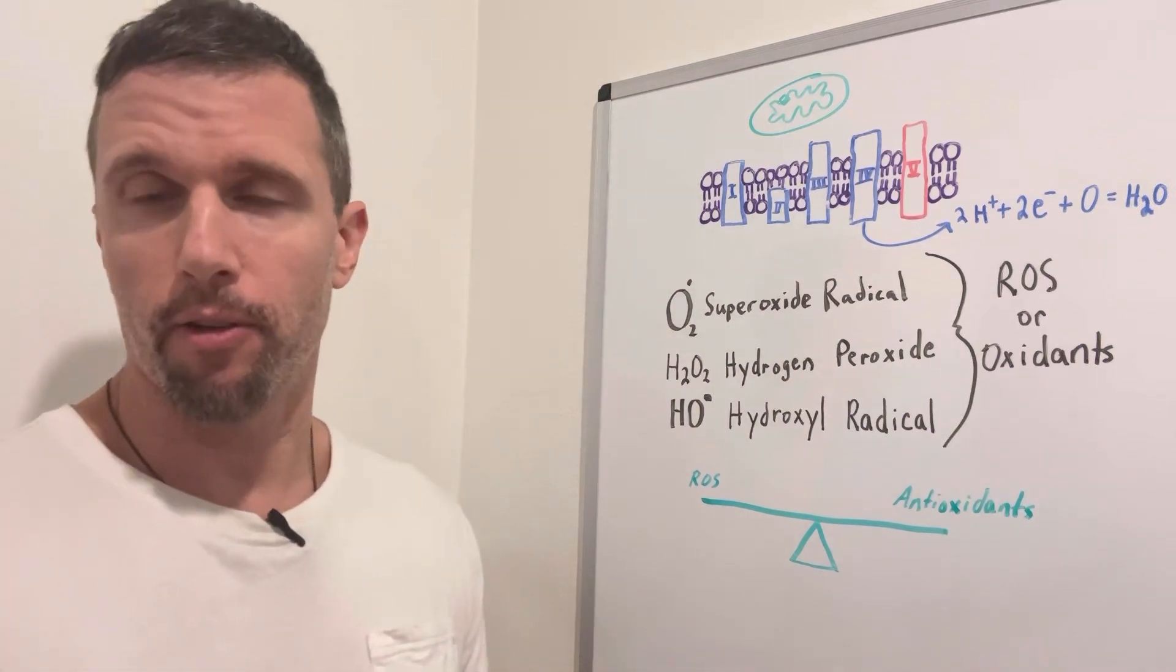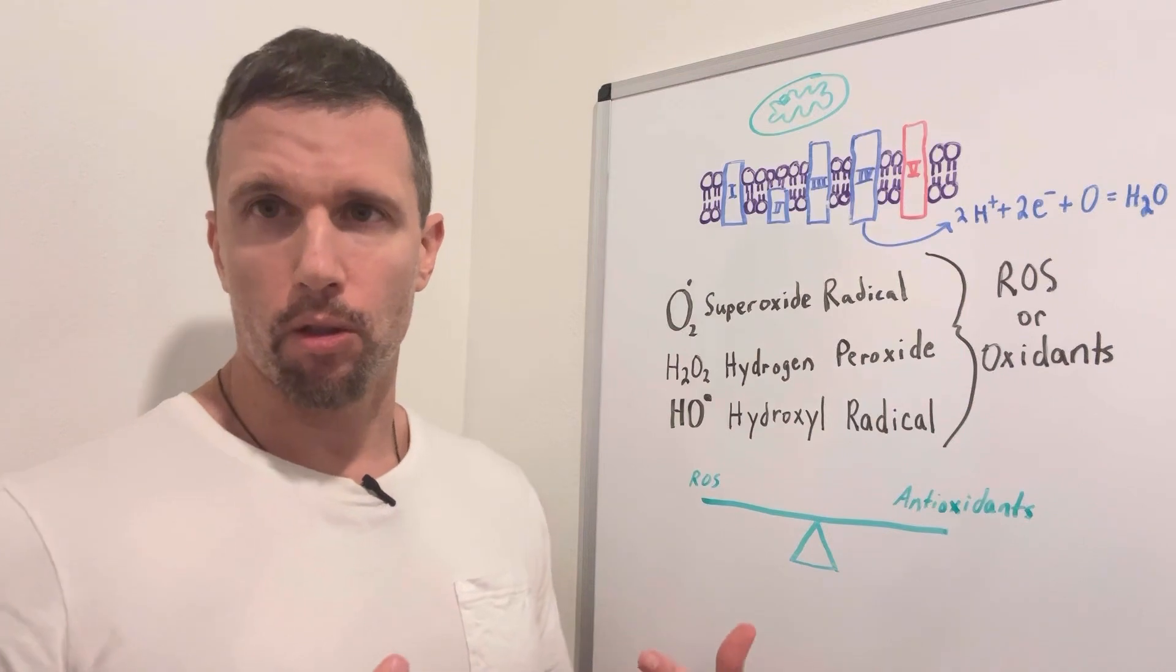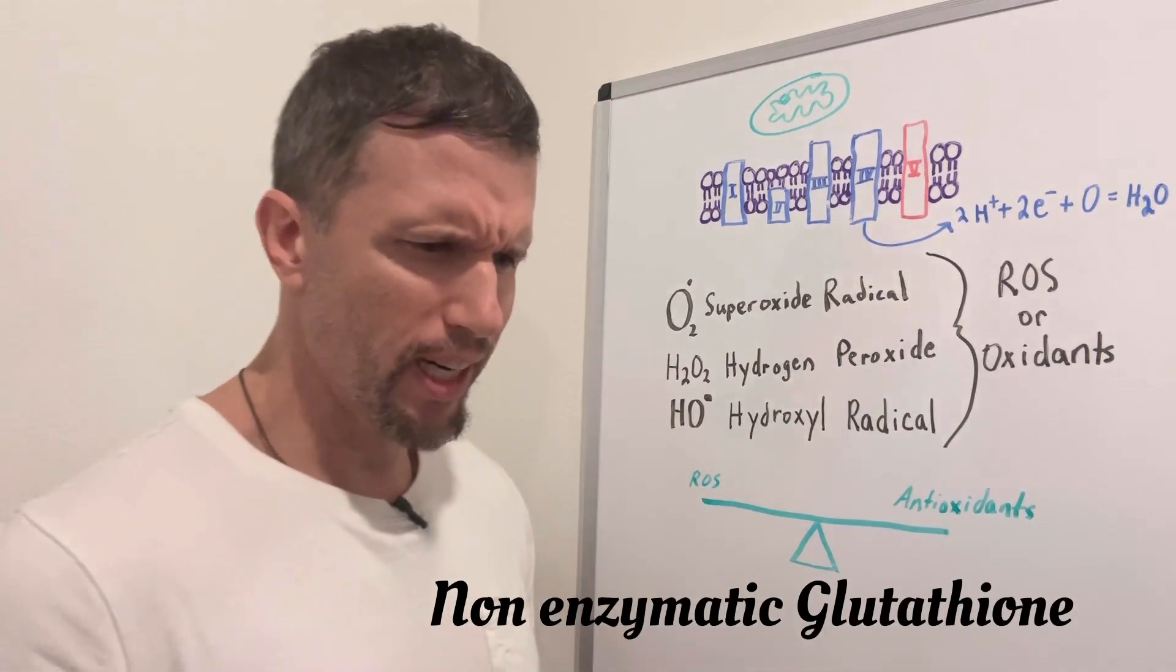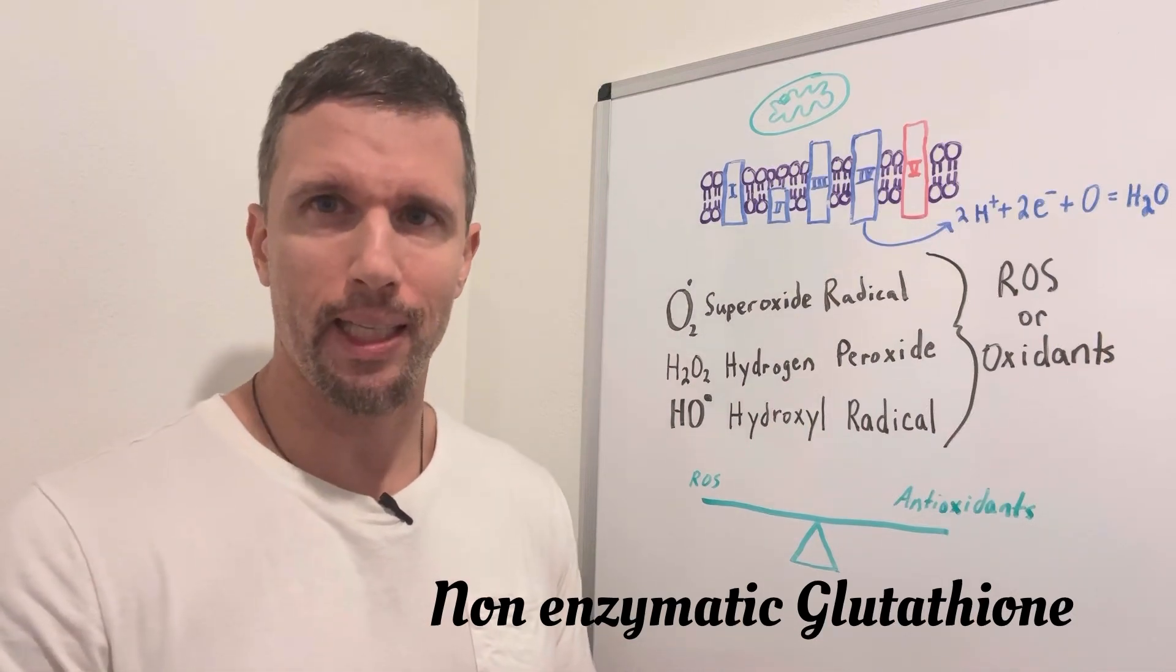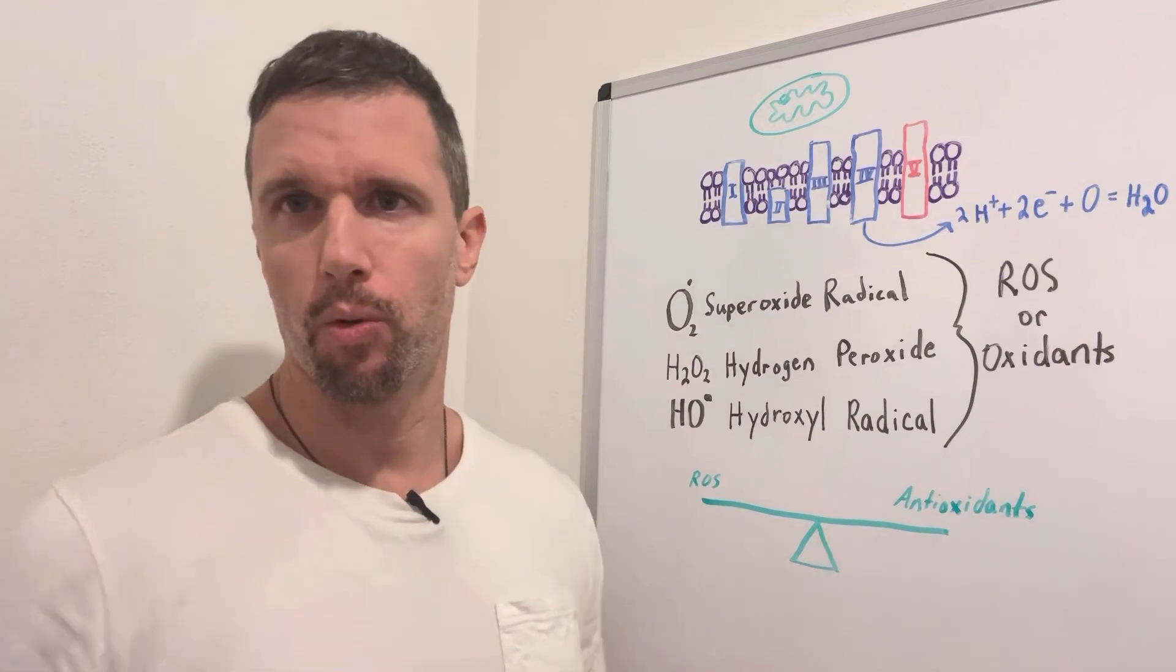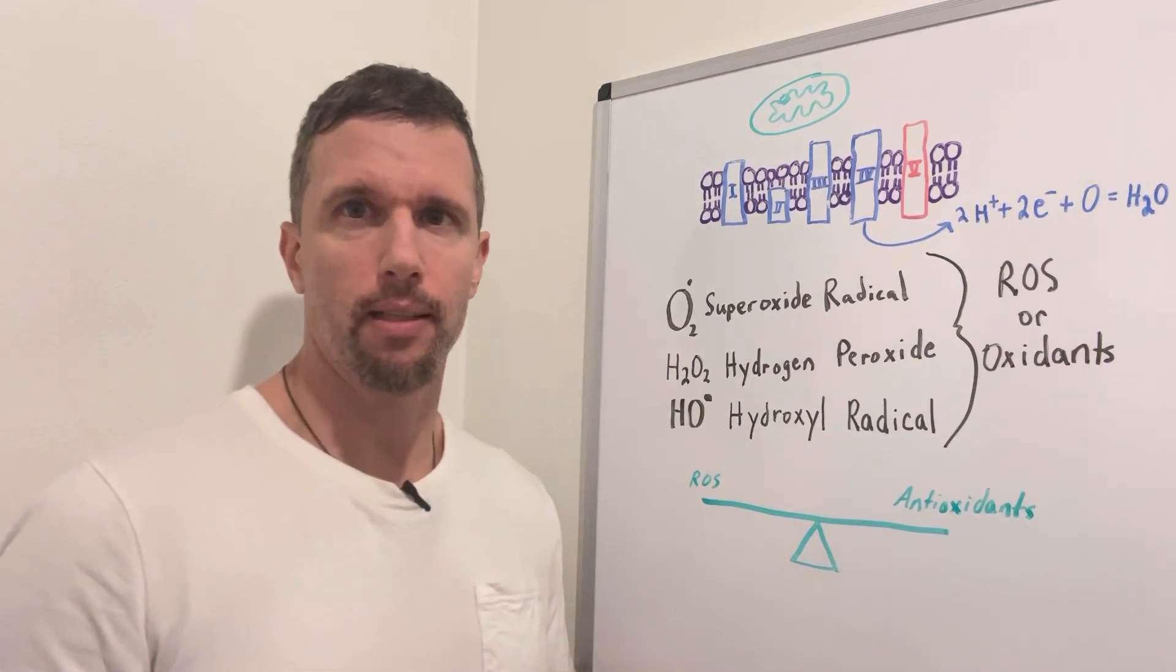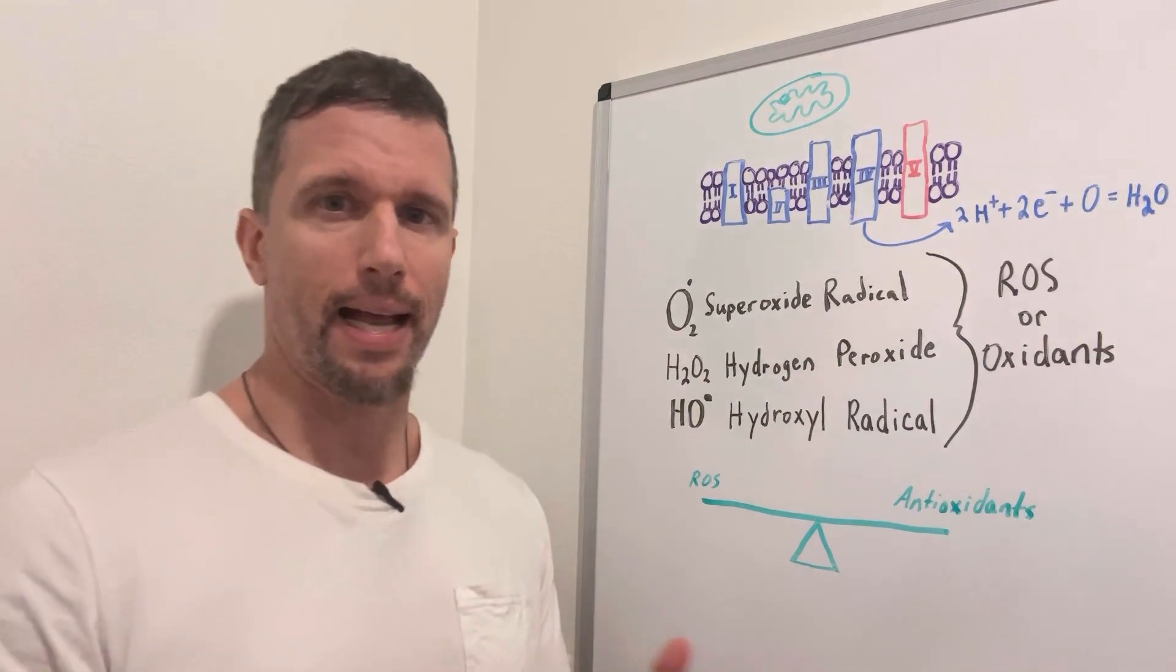And then our body, our liver, primarily makes a tripeptide molecule called glutathione. And what it does is whenever electrons are stolen from the cell membrane or stolen from a protein, it'll kind of donate. It will reduce those back to their normal state with paired electrons so that they don't try to steal from something else and cause this cascade of events.